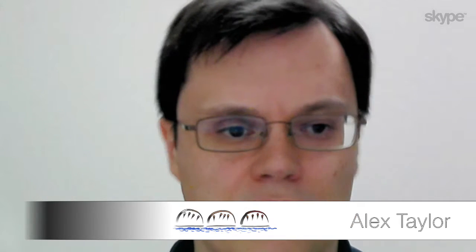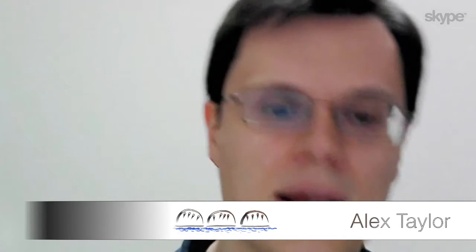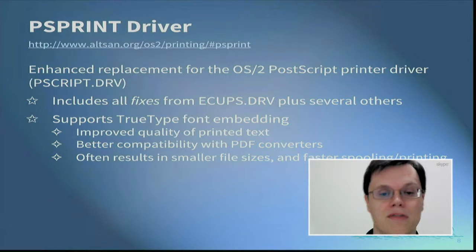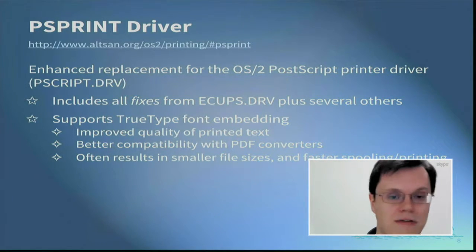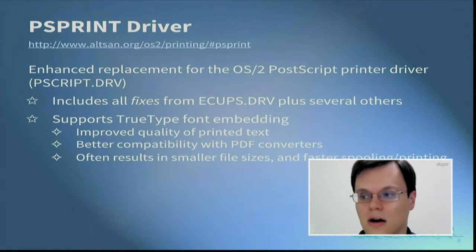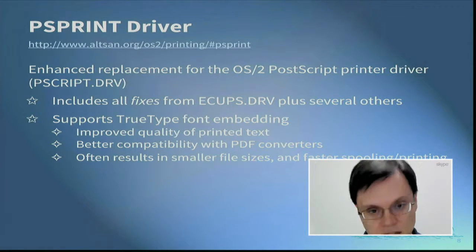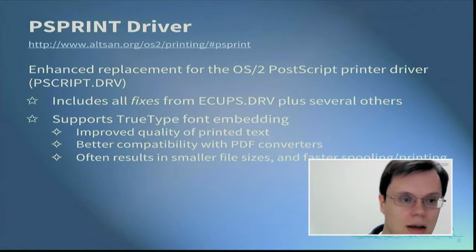Embedding the fonts generally makes the printed text look better, and it can often result in a smaller print job as well, which in turn may lead to faster queuing, spooling, and printing. As a bonus, if you use a printer object to generate PDF files — such as through ePDF or PMPDF — it provides the same benefit in the PDF. In other words, the PDF actually contains the text and not a bitmap of the text, which allows things like text searching to work.